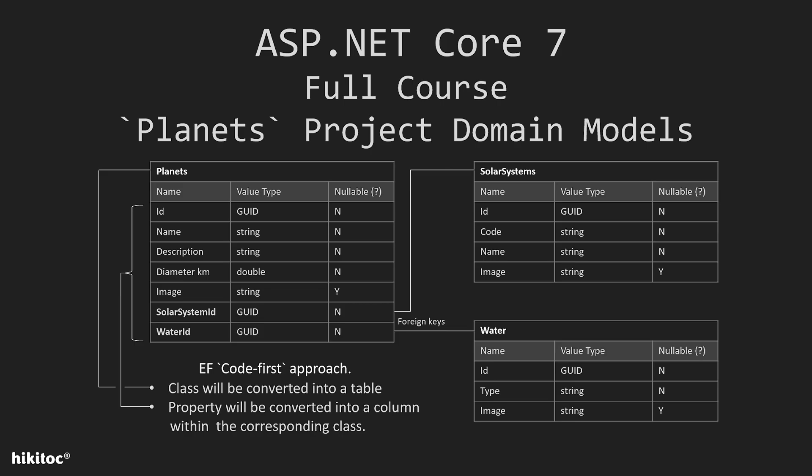Additionally, it will have two foreign key constraints referencing the SolarSystem and Water classes, enabling navigation to these related classes. Similarly, the other classes will have their own properties. By providing these three classes with properties to Entity Framework, the framework will generate a database schema based on them. Each class will correspond to a table and the table columns will mirror the class properties.